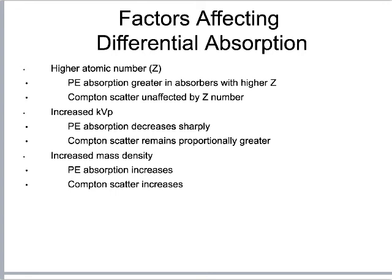Compton scatter doesn't care about Z number — it happens randomly regardless of tissue type and has zero diagnostic value. It cannot be tied back to Z number. That's a major factor in linear attenuation coefficients: higher Z number materials create higher contrast on our images.